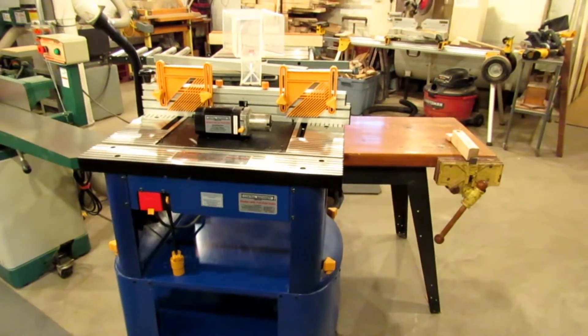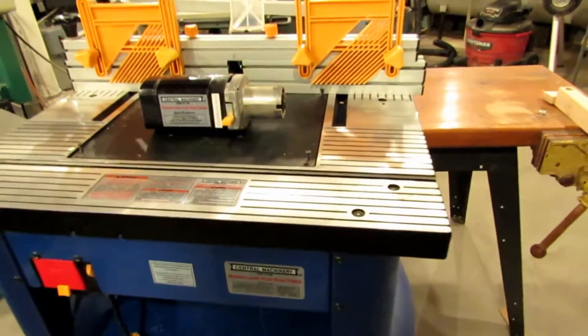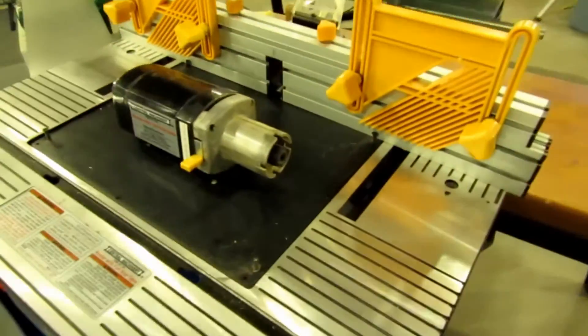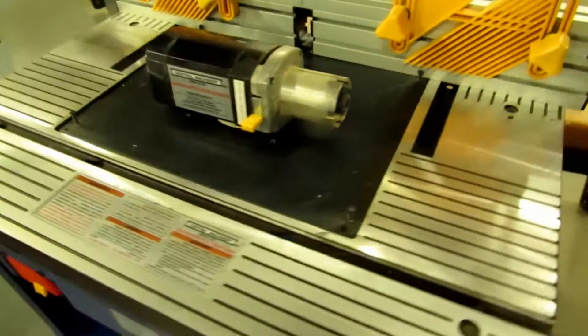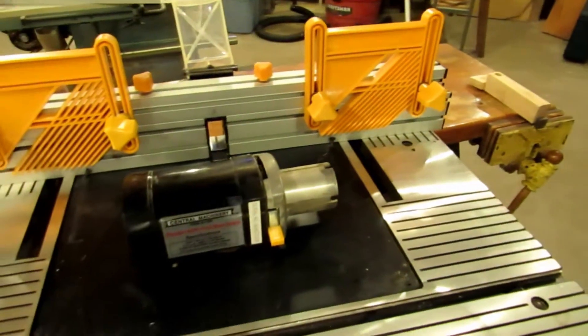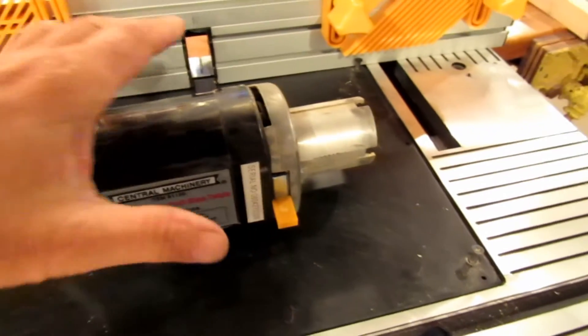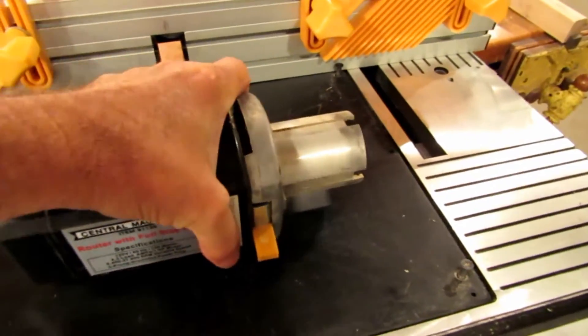A couple years ago I purchased this Harbor Freight number 91130 motorized router table. I was real happy with the quality of the flatness of the top and the fence system and guards and everything else, but never happy with the way the router bits mounted or the motor actually fit in the table.